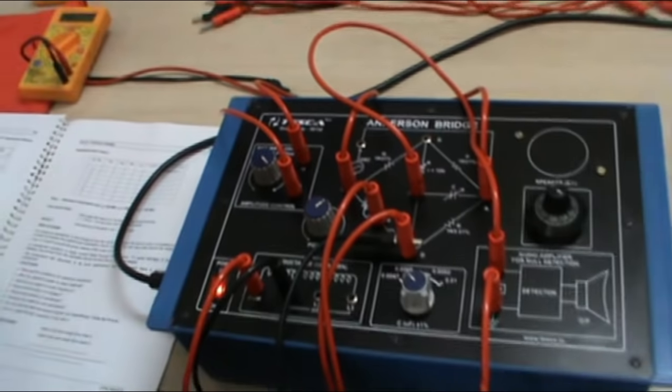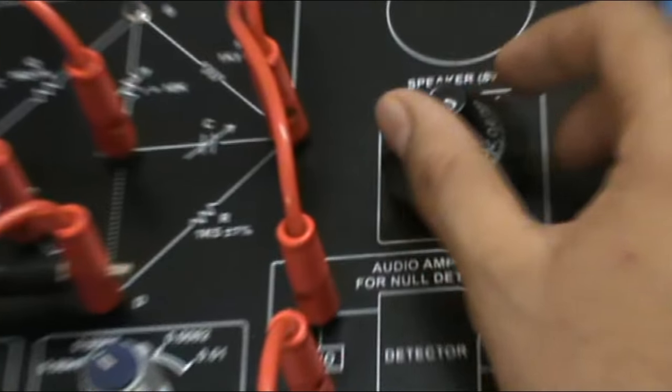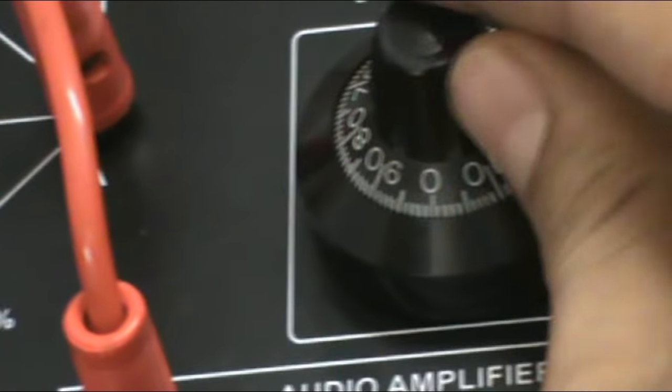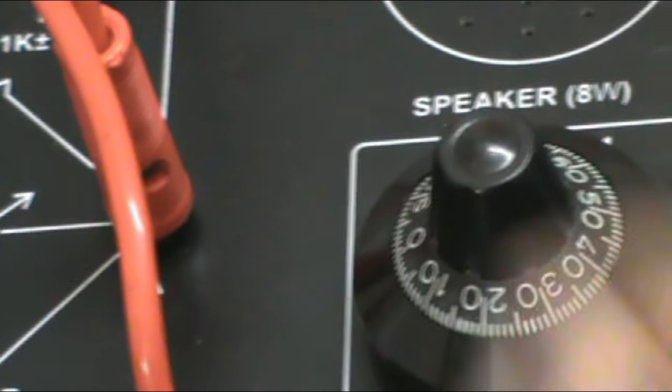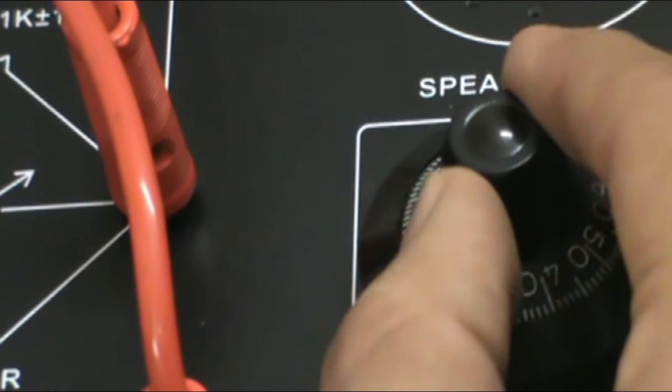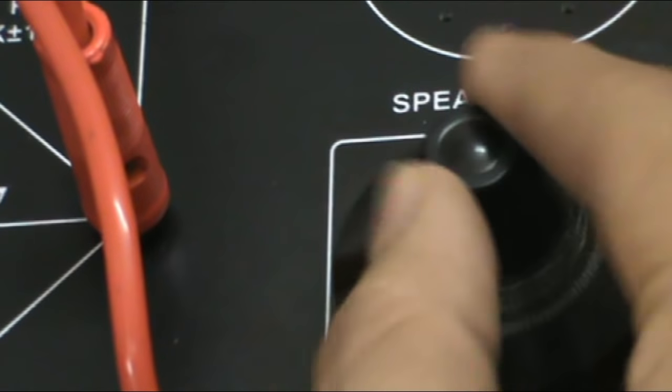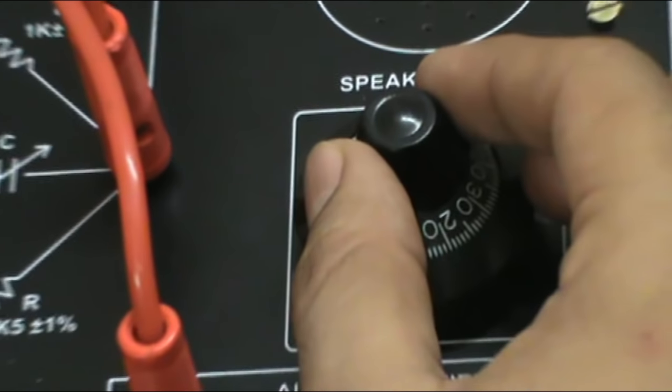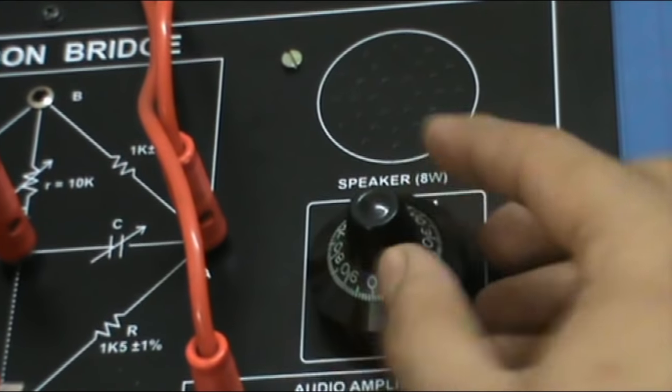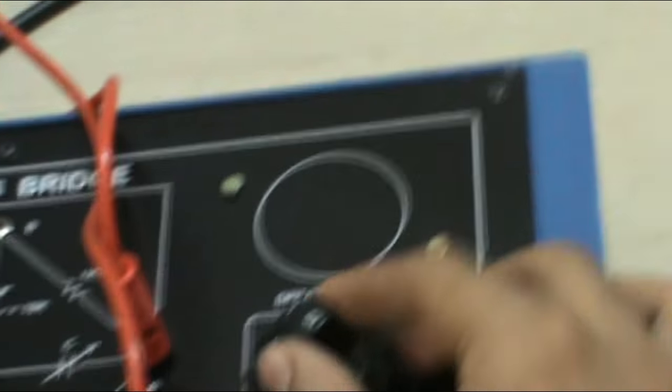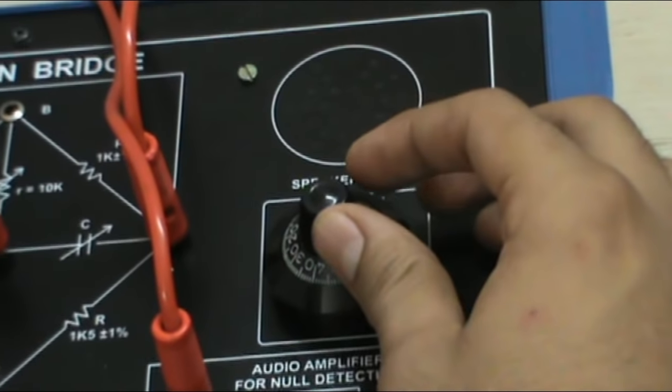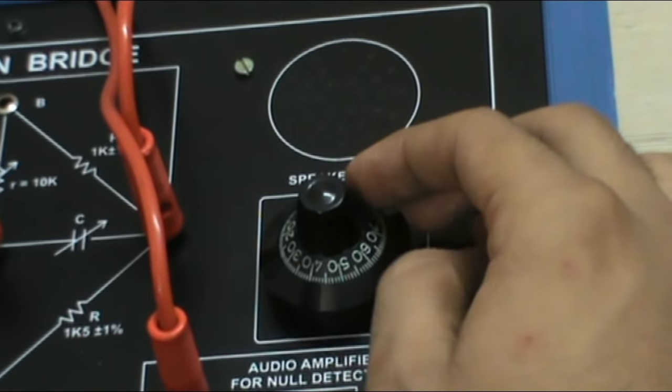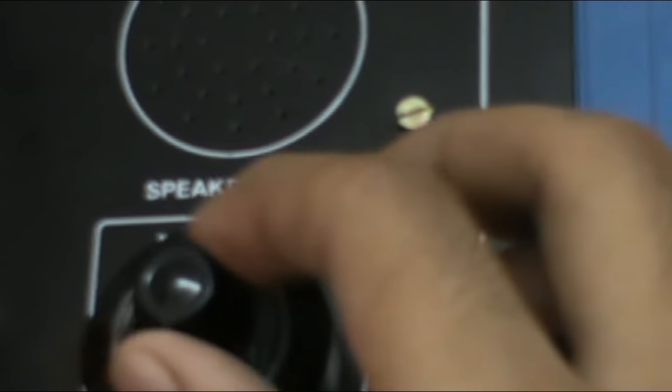Now with the help of this resistance R, vary this resistance R in such a way that the tone of this speaker minimizes. The volume is reduced. As you can hear the volume is reducing.